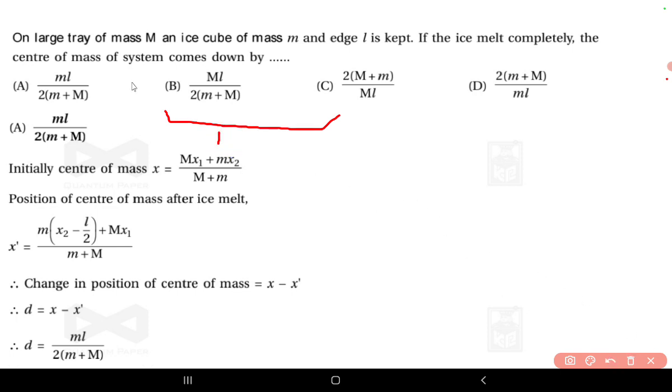We can also assume an infinitely large tray, on which we have an ice cube whose mass is small m and whose edge is of length l. And what is given is if the ice melts, then what will happen? Its center of mass will change.